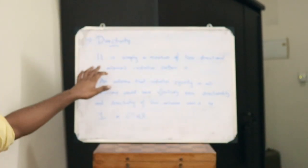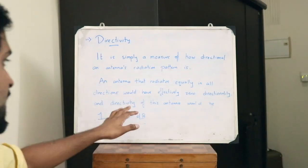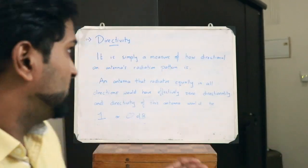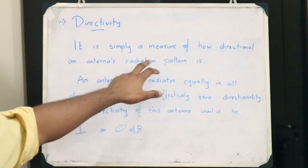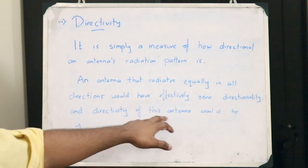The next parameter is directivity. Directivity is simply a measure of how directional an antenna's radiation pattern is. For instance, if an antenna radiates in all directions equally and does not have a particular preferred direction, then it would have effectively zero directionality. The directivity of such an antenna would be said to be 1, or 0 dB. An antenna that radiates equally in all directions has zero directionality and a directivity of 1 or 0 dB.